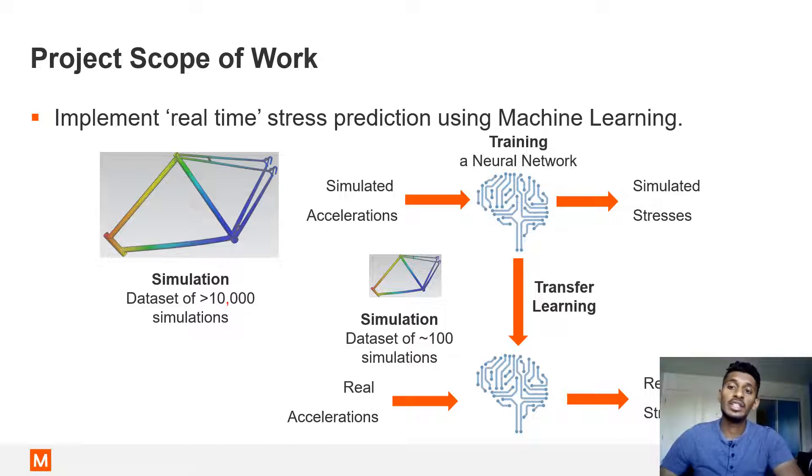In many cases, a limited amount of data can be obtained from test articles or a limited number of extensively instrumented structures. This opens the door to using the concept of transfer learning in order to use this limited amount of real-world data to tune a neural network trained from finite element model to better reflect the behavior of the real structure. This study examines the feasibility of this approach with a very simple structure.